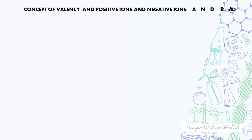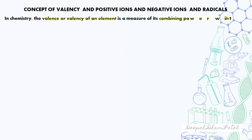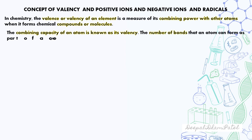Now let us see the concept of valency and positive ions and negative ions and radicals. Valency is another important concept of chemistry, which tells us how much the bonding capacity of a particular atom is. Or you can say in chemistry, the valence or the valency of an element is the measure of its combining power with another atom when it forms chemical compounds or molecules. The combining capacity of atoms is known as valencies. The number of bonds that an atom can form as a part of compound is expressed by the valency of an element.